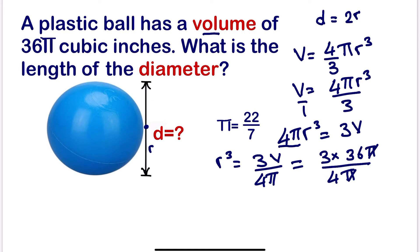r³ will be equal to 3 times 9, which is 27.